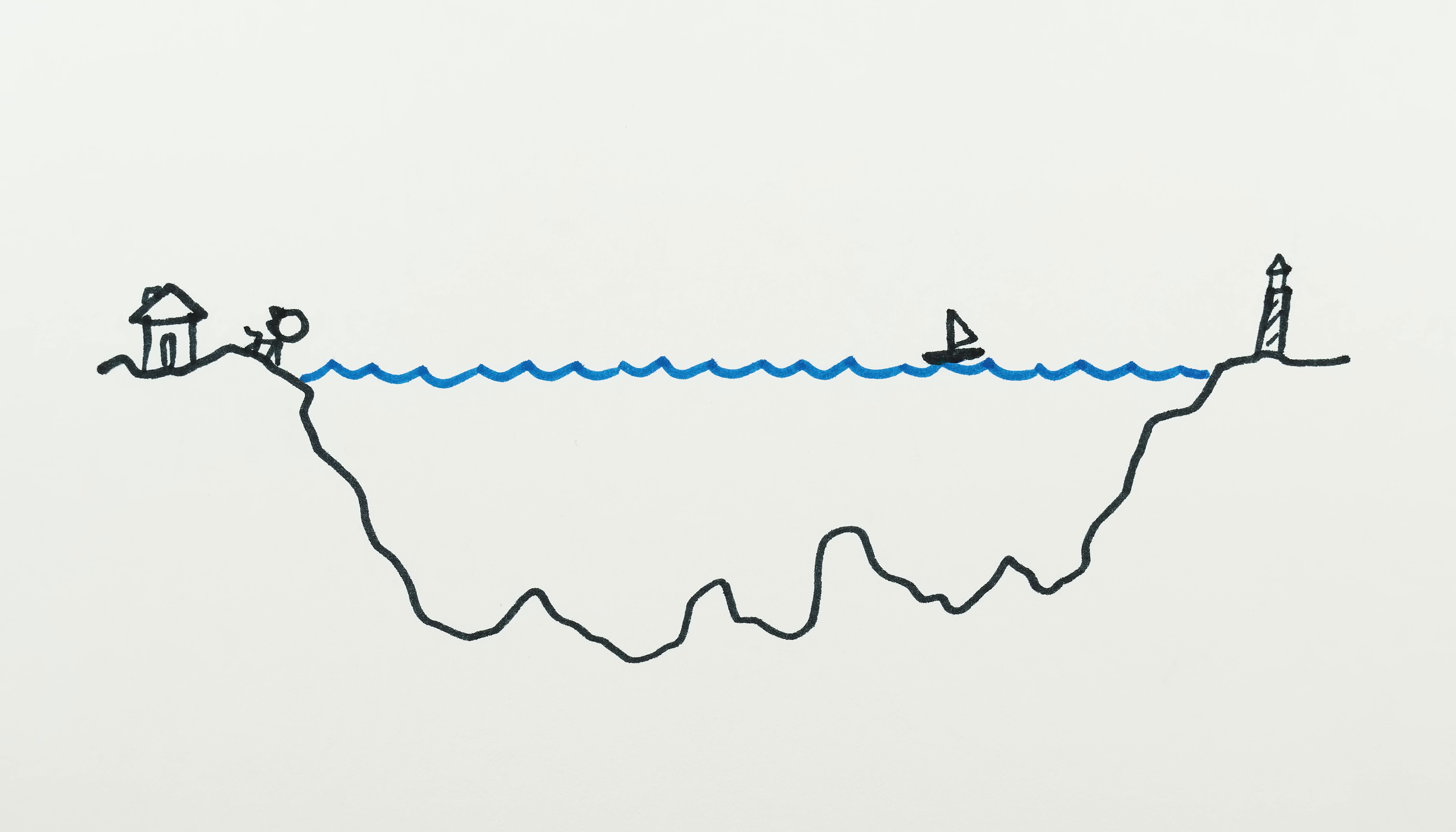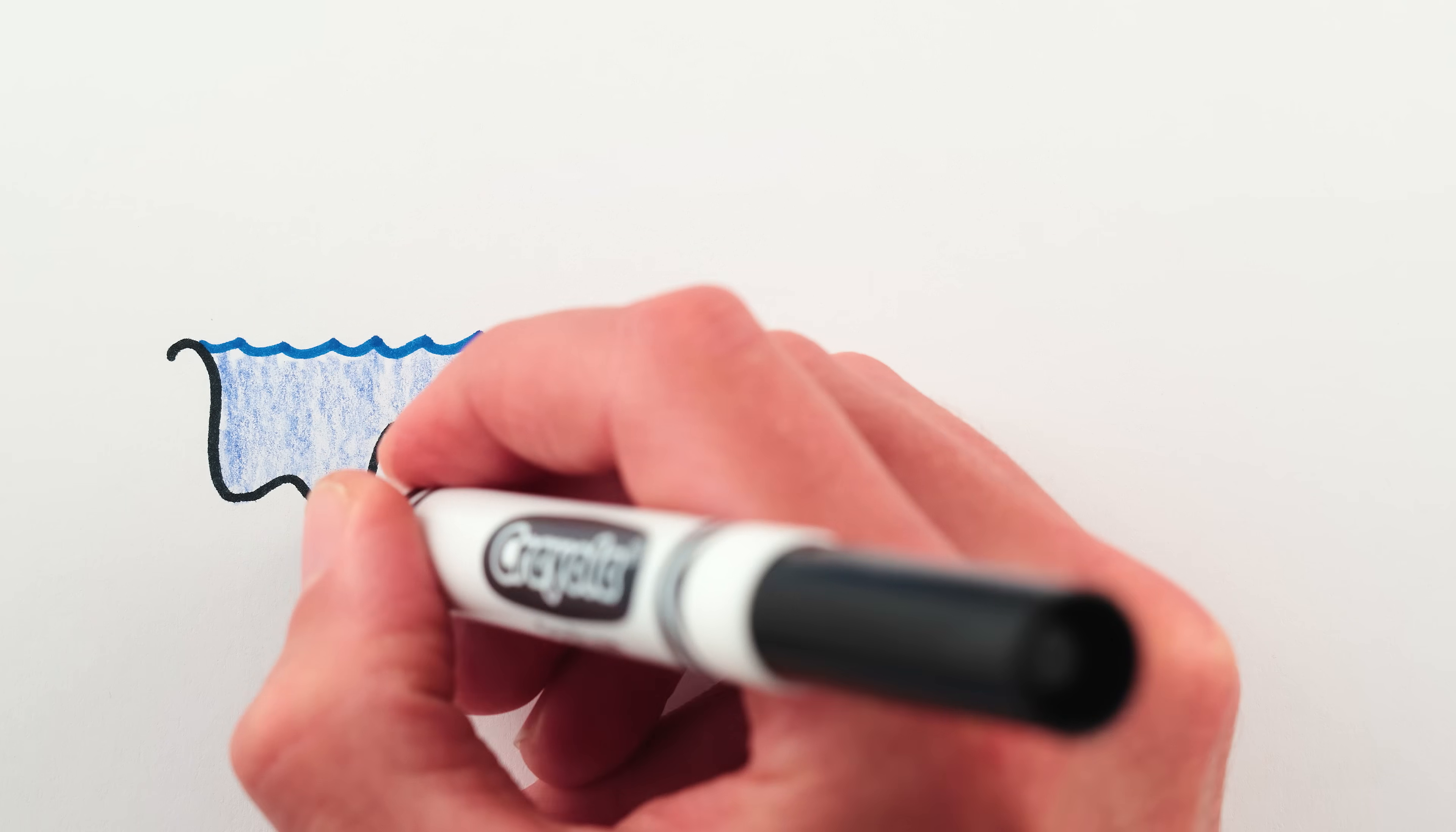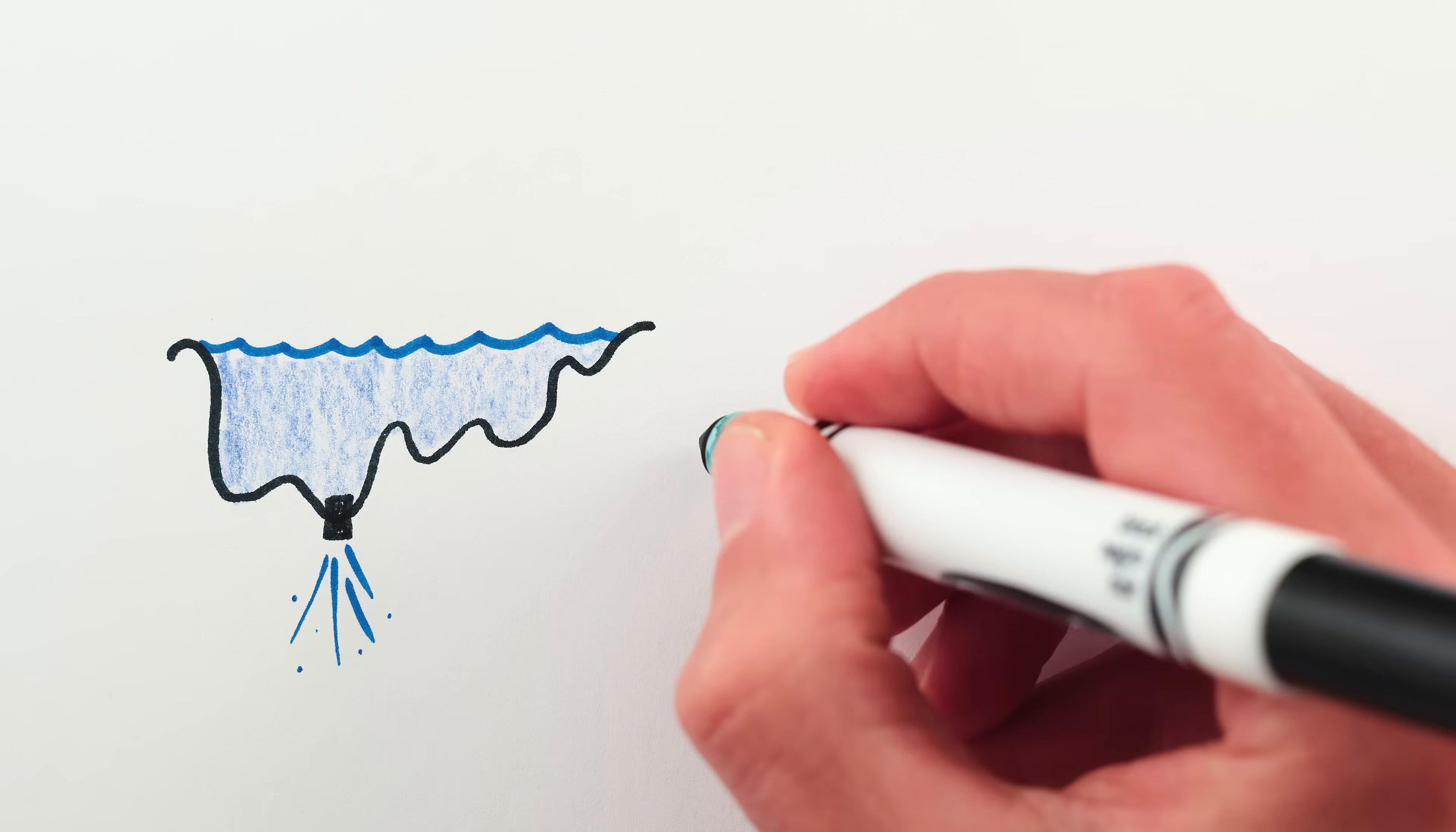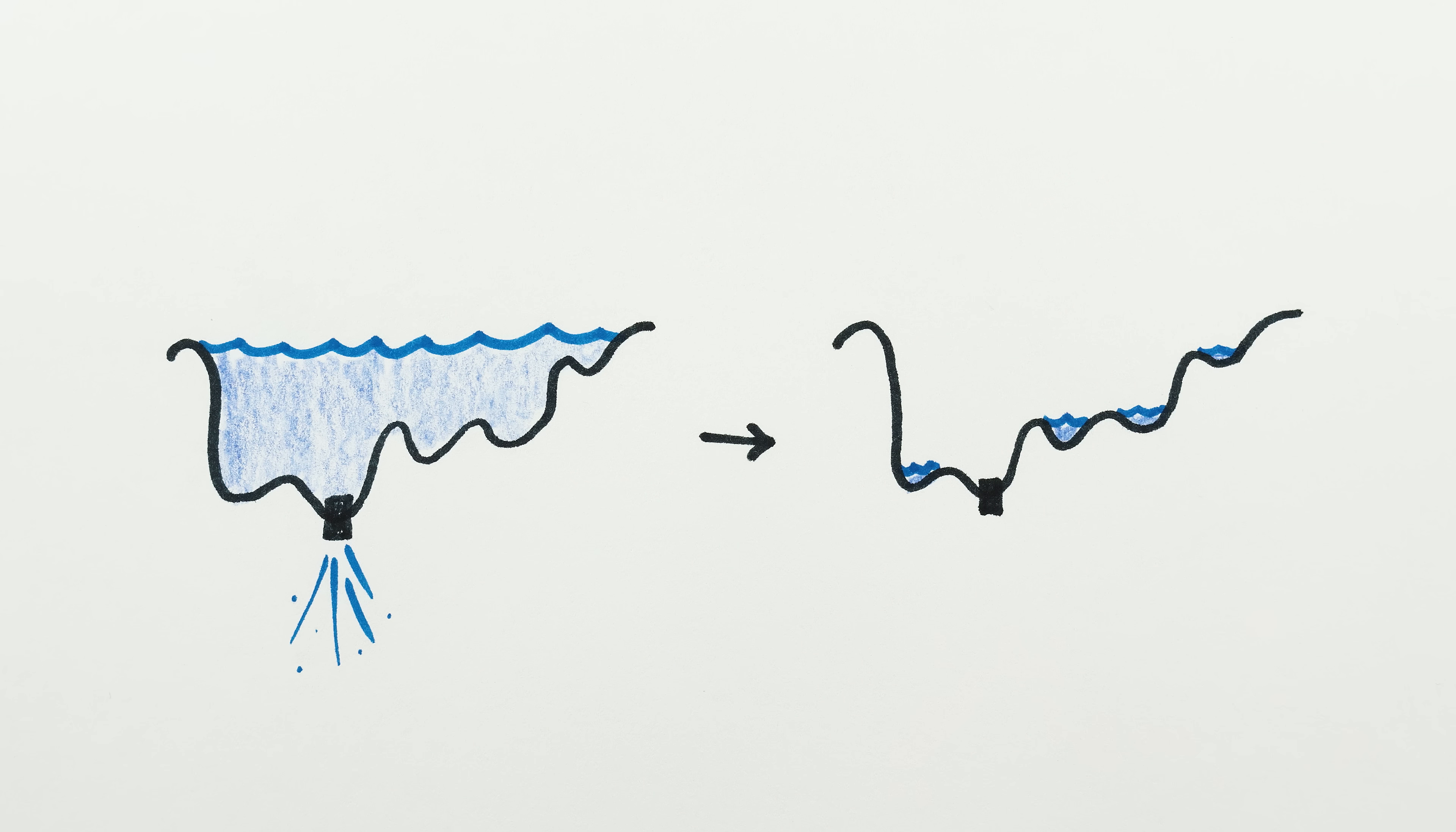But draining doesn't work like that. The ocean has topography, so even if you put your drain in the deepest part of the ocean, eventually some of the water – actually, a lot of it – will get cut off from the drain and stick around as landlocked seas.